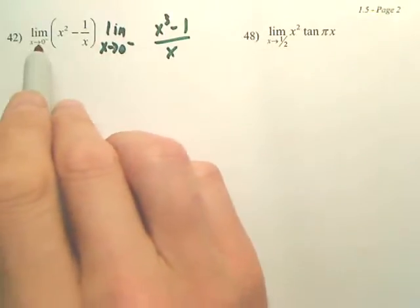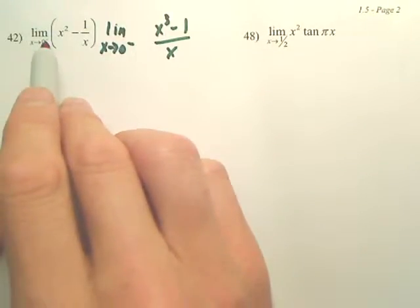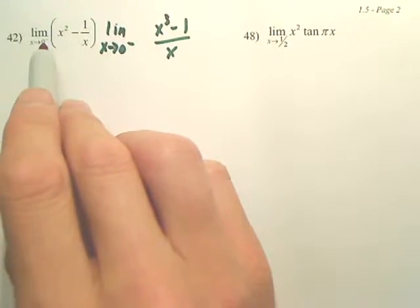So the problem is, if we're taking the limit as x approaches zero from the negative side, it does not exist, but could we give it a negative or positive infinity?